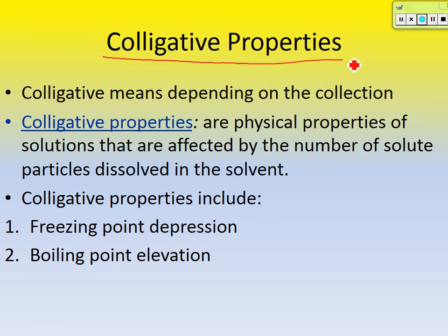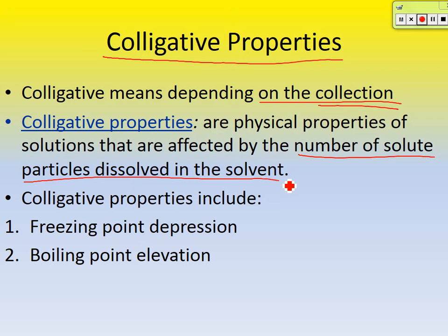So let's get started. Follow along in your guided notes. Colligative properties means depending on the collection. We're going to talk about colligative properties of solutions — we're going to put a bunch of stuff in water and see how that changes its properties, namely the boiling point and the freezing point. The two properties we'll focus on are freezing point depression and boiling point elevation.